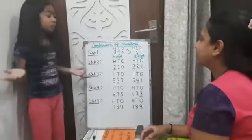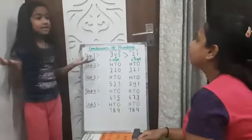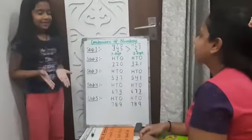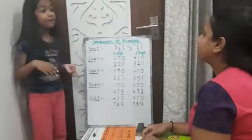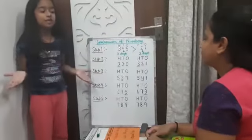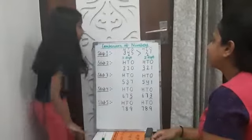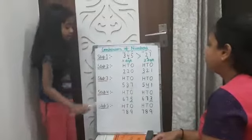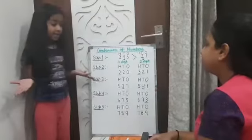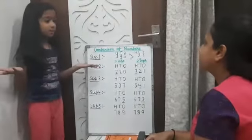Step two: If both numbers have three digits, check the hundreds place. Bigger hundreds digit means bigger number.